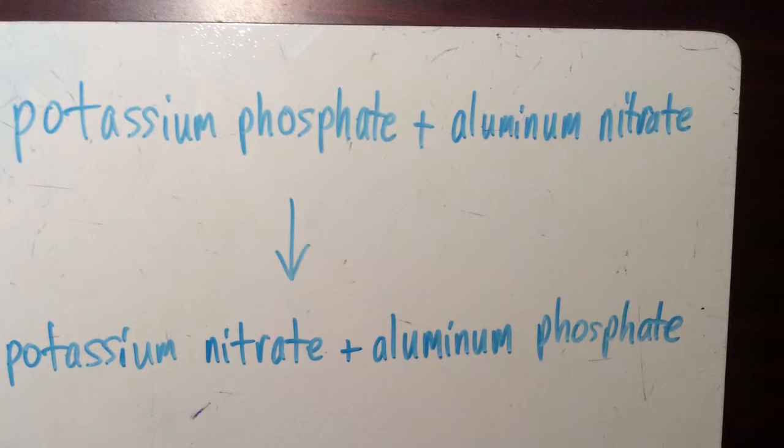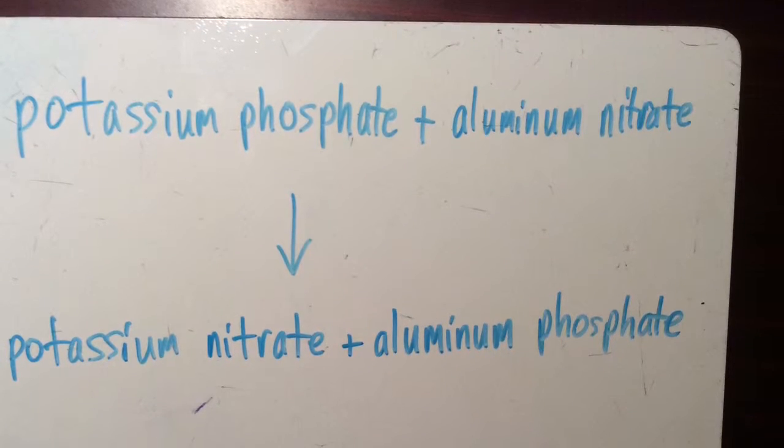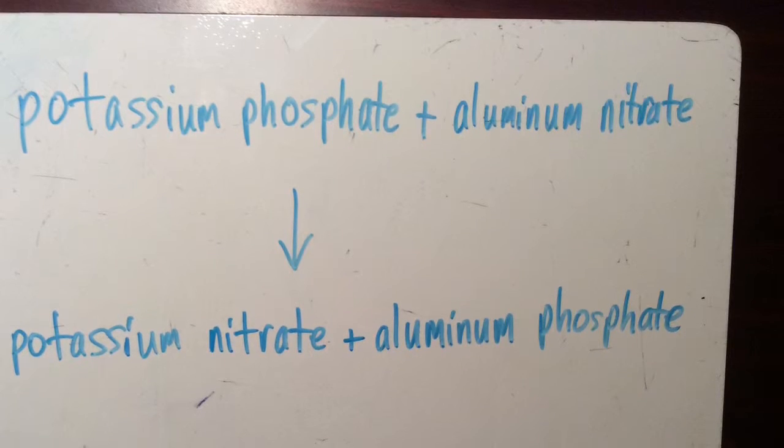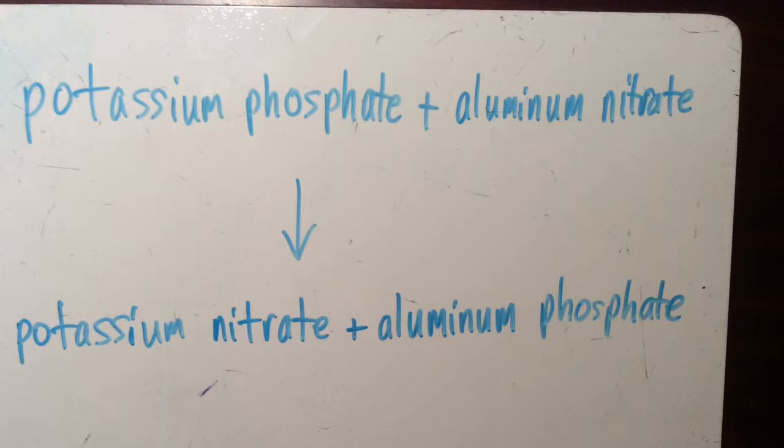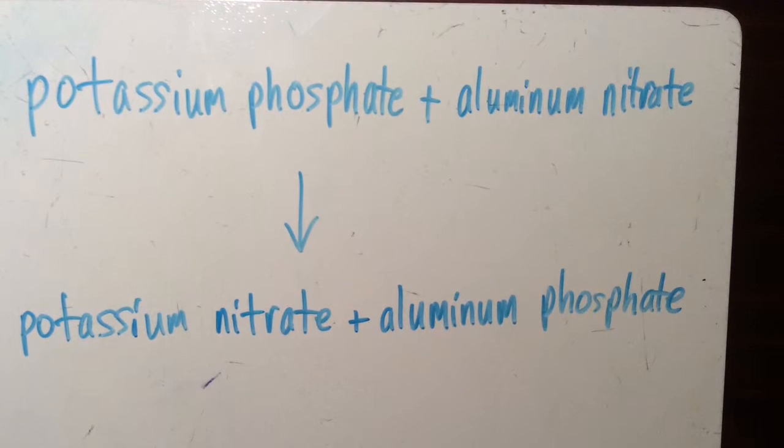Hello. In this video I will be explaining how to balance a chemical equation from a word problem. The equation we will be using is potassium phosphate plus aluminum nitrate yields potassium nitrate plus aluminum phosphate.